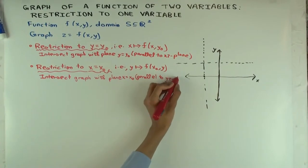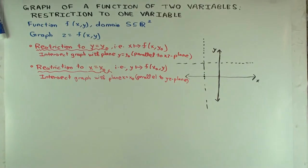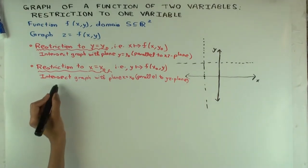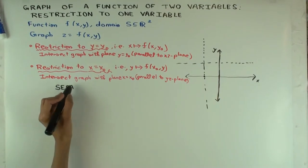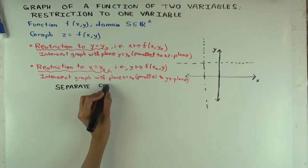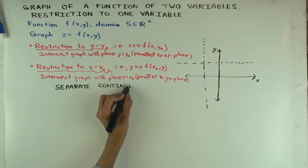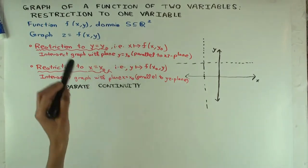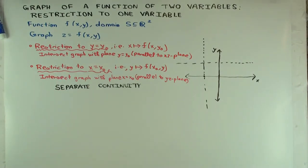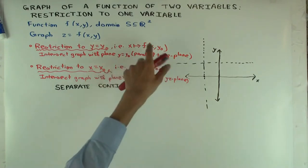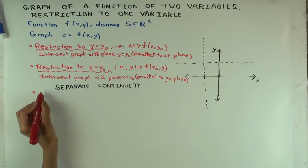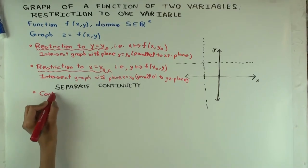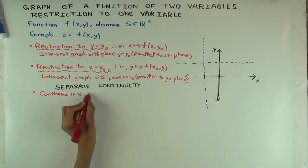Now I want to talk about the notion of separate continuity. What does separate continuity mean? What does it mean for a function to be continuous in one variable? For a function f of x, y, what does it mean to be continuous in x? Continuous in x — let's think about it at a point x0, y0. What function are we saying is continuous?